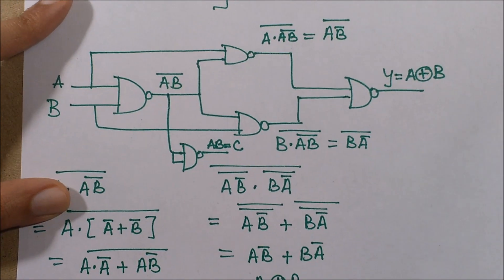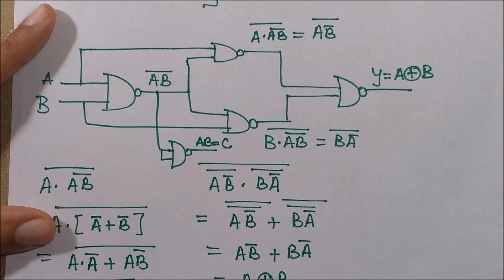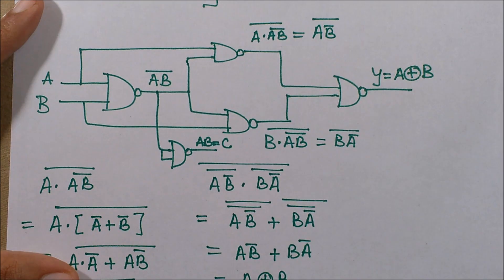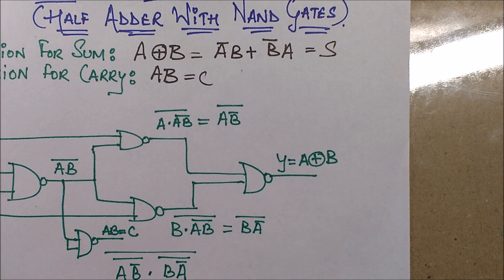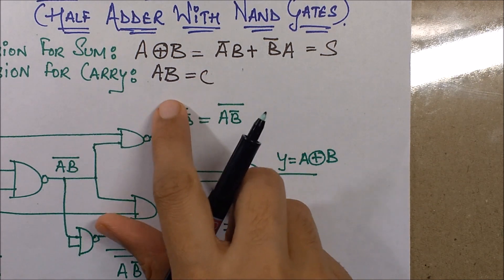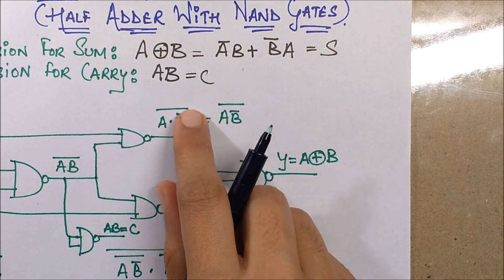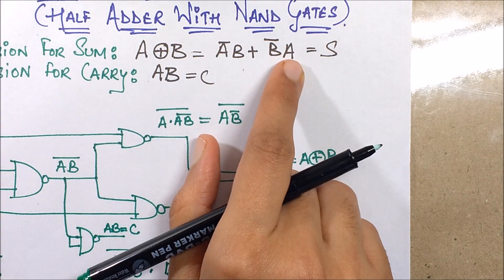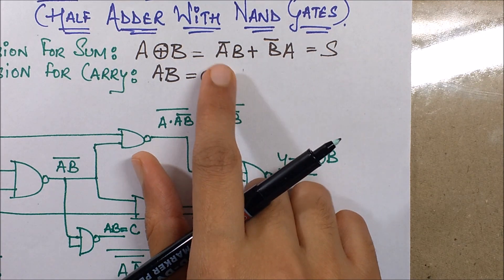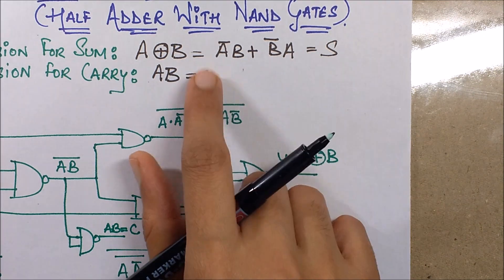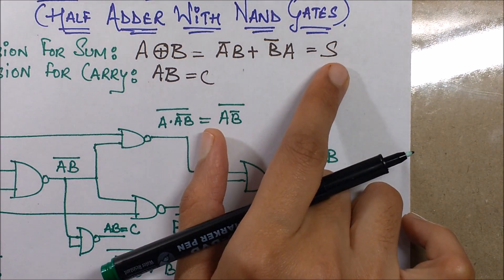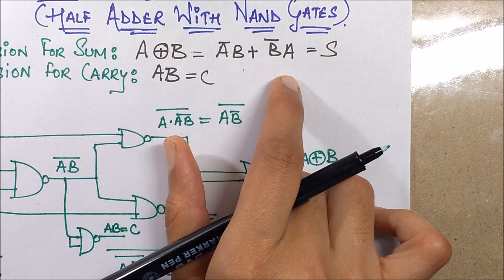First of all, what we do is we form AB bar. You might be wondering why AB bar is required. One hint is we require it for the carry expression, and the other thing is we also require it for forming the sum expression. As you can see, the terms here are of the form A and B combinations — it is AB, and it is A'B plus B'A — so definitely we will be requiring some form of combination of AB.